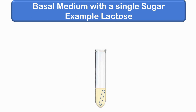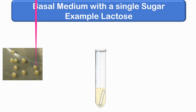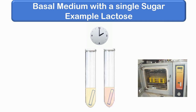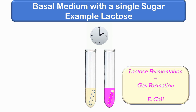For the sugar fermentation test procedure, we take a test tube containing basal medium with a single sugar — in this example, lactose. The medium also contains an inverted Durham tube and a pH indicator, in this example Andrade's indicator. The tube is inoculated with a colony from the test bacterium and incubated at 37 degrees Celsius for 24 to 48 hours. Development of pink color in the broth indicates the organism can ferment lactose. Bubble formation in the Durham tube indicates gas production. E. coli, for example, ferments lactose and produces both pink color and gas.